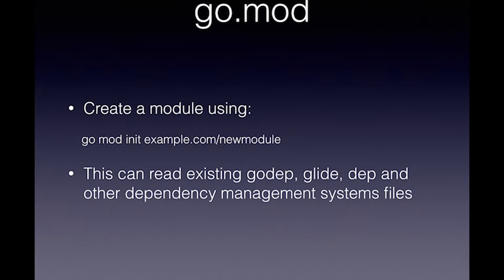The nice thing about Go modules is that they can read existing package managers. I saw a talk from people from JFrog and they said there were 19 different existing package managers that are supported. That sort of explains the problem we have in the Go ecosystem — the fact that you have 19 dependency managers.